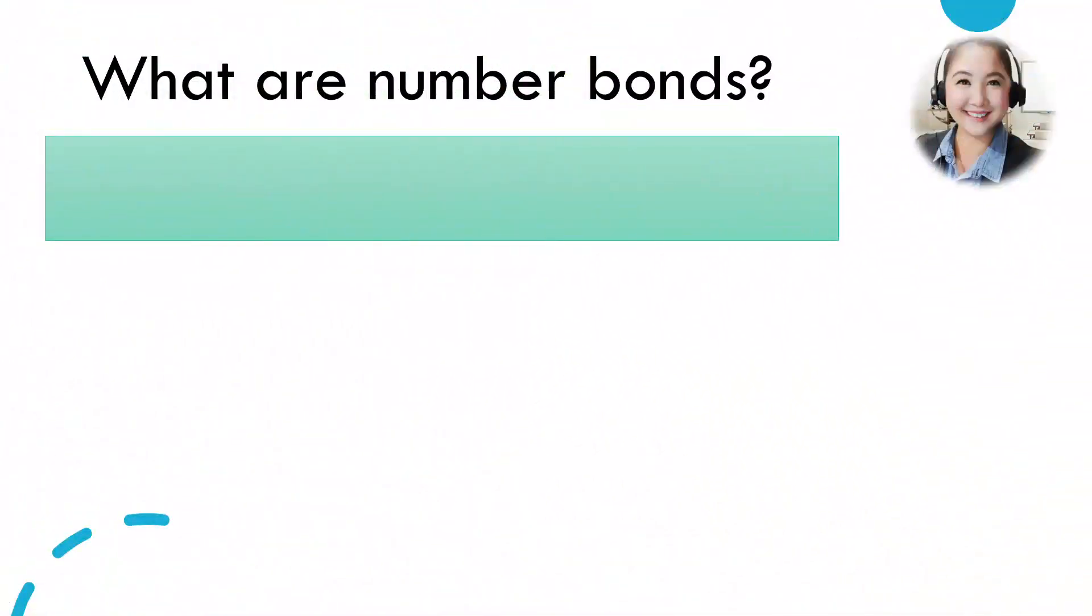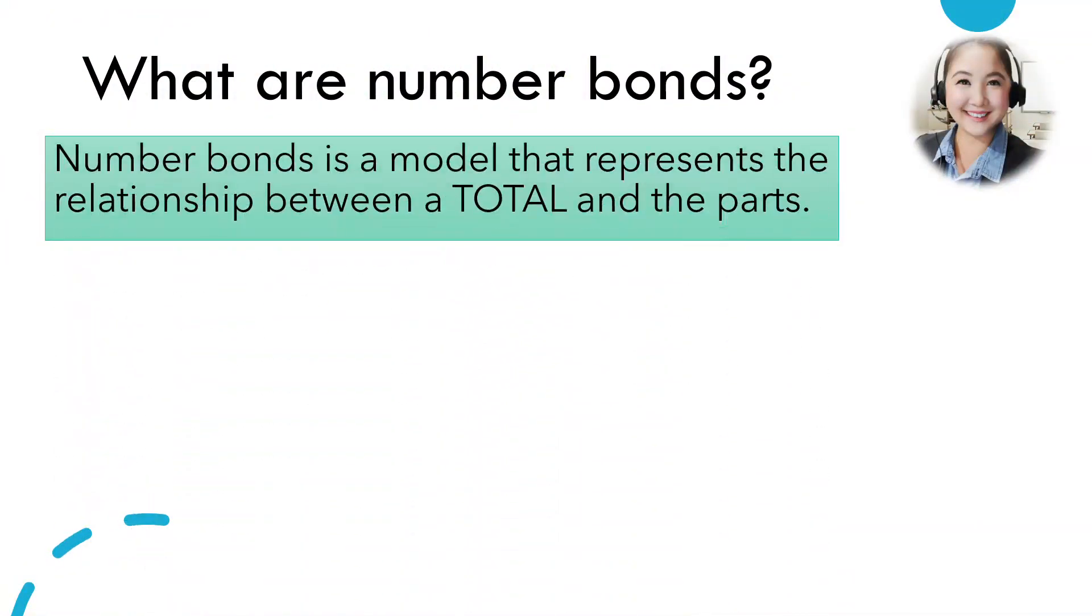Alright, number bonds is a model that represents the relationship between a total and the parts. Look at this diagram. You can see here three circles, one big circle, and two parts.